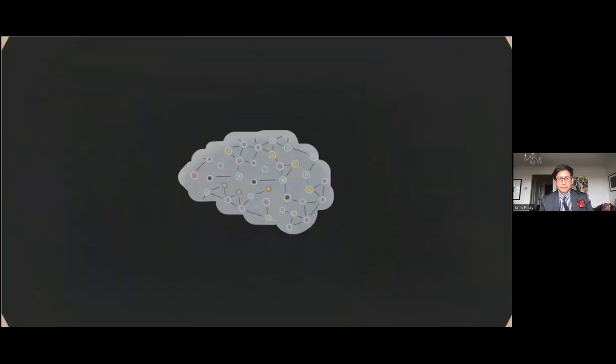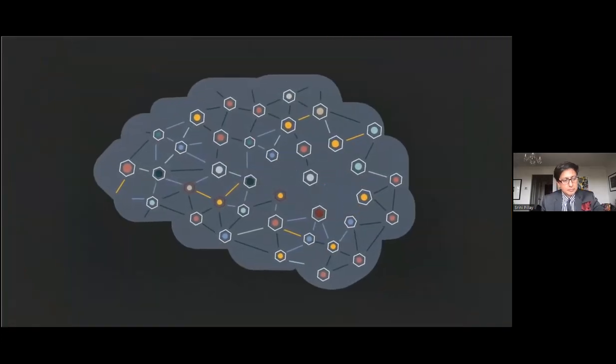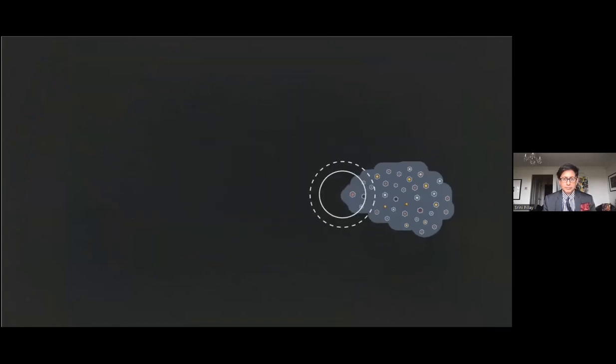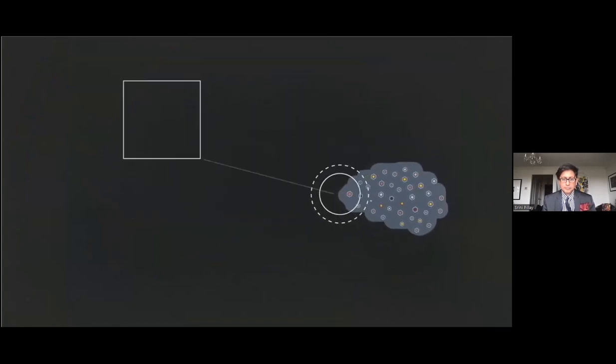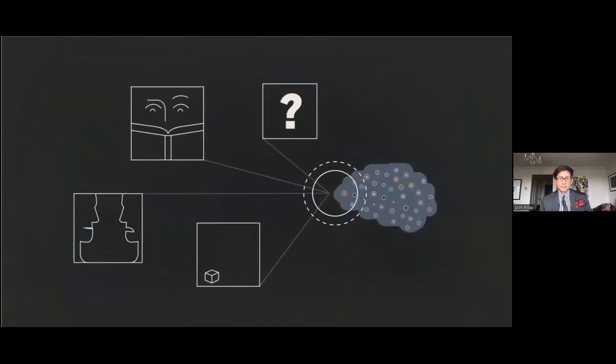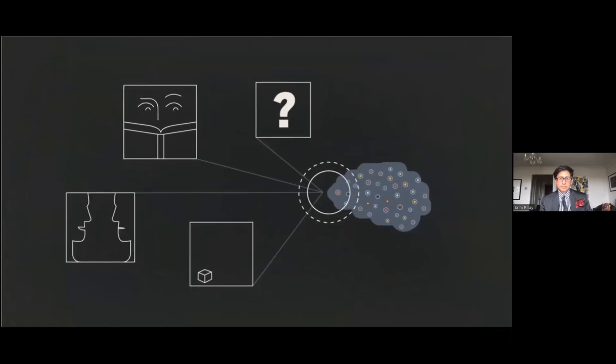That's not all though. Cortisol can literally cause your brain to shrink in size. Too much of it results in the loss of synaptic connections between neurons and the shrinking of your prefrontal cortex, the part of your brain that regulates behaviors like concentration, decision-making, judgment, and social interaction.